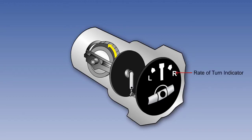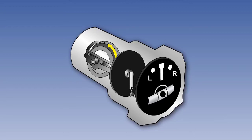The turn indicator, which is part of the instrument face highlighted here, uses a rate gyro to measure the rate of turn around the aircraft's vertical axis. The slip indicator is a simple pendulous device, which indicates whether a turn is balanced or not. We will look at both instruments in some detail, starting with the turn indicator.